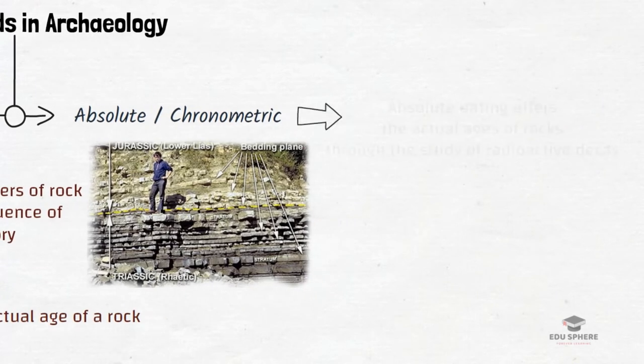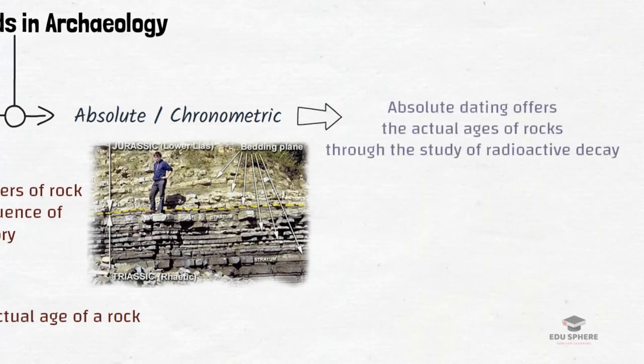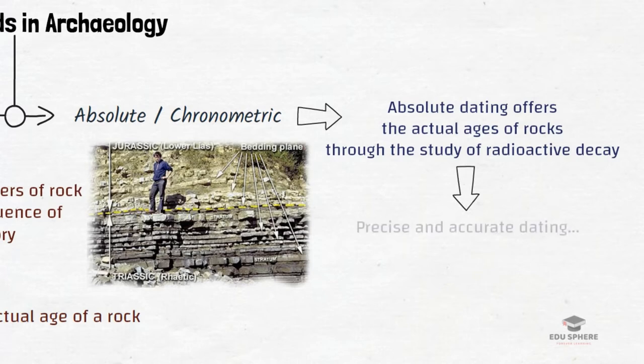On the other hand, the Absolute dating technique determines the actual age of rocks through the study of radioactive decay — i.e., how many years ago the object was actually formed. It offers precise and accurate dating.